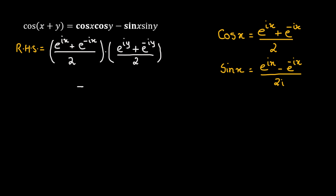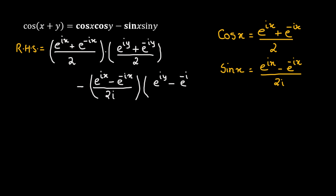Minus sine x, whose Euler's formula is e raised to the power of ix minus e raised to the power of negative ix, divided by 2i, multiplied by the Euler's formula for sine y, which is e raised to the power of iy minus e raised to the power of negative iy, divided by 2i.